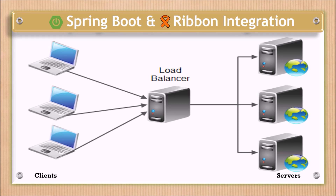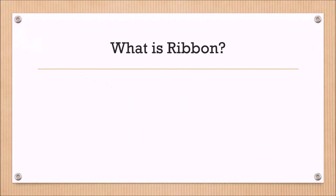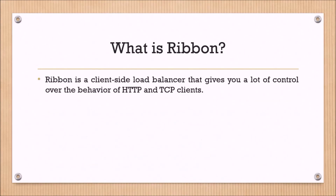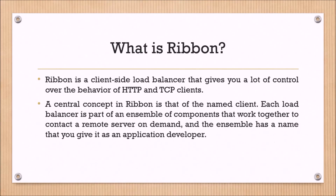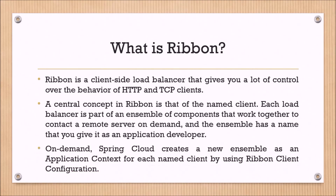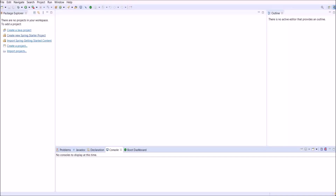If you haven't watched our previous microservice-related video, please watch it before going further. First, let's see what Ribbon is. Ribbon is a client-side load balancer that gives you a lot of control over the behavior of HTTP and TCP clients. A central concept in Ribbon is that of the named client. Each load balancer is part of an ensemble of components that work together to contact a remote server on demand, and the ensemble has a name that you give it as an application developer. On demand, Spring Cloud creates a new ensemble as an application context for each named client by using the Ribbon client configuration.